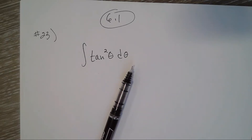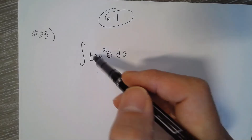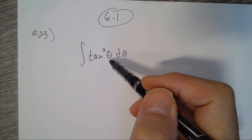6.1, number 23. To evaluate the integral, I would use a Pythagorean identity. Rewrite tan squared — we don't know the antiderivative of tangent squared directly,